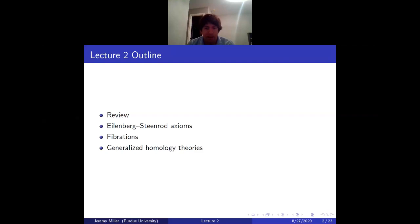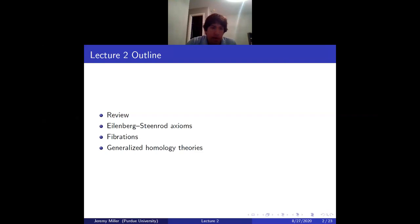The Eilenberg-Steenrod axioms are five axioms that say if you have some functors satisfying these conditions, then the functors agree with homology. We're going to check all but the hardest one today — the hardest one involves the notion of fibrations. So the plan for next week is a review or crash course in algebraic topology: Tuesday I'll talk about homotopy groups, Thursday about fibrations, then the following week we'll get back to proving the Dold-Thom-Kahn theorem. The final topic for today is generalized homology theories, mostly as filler.